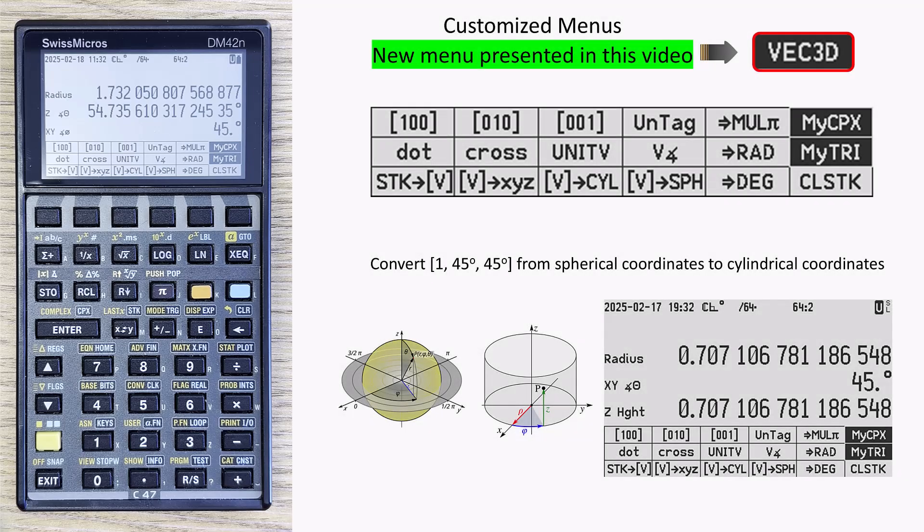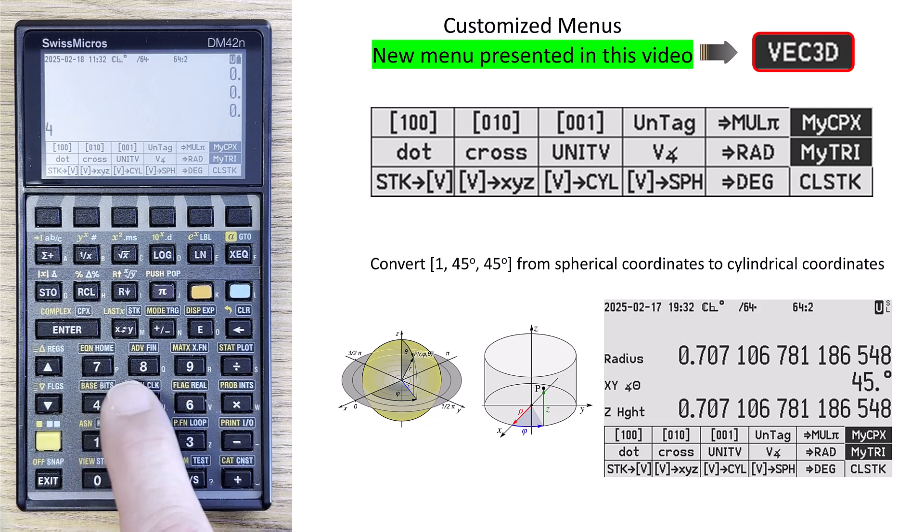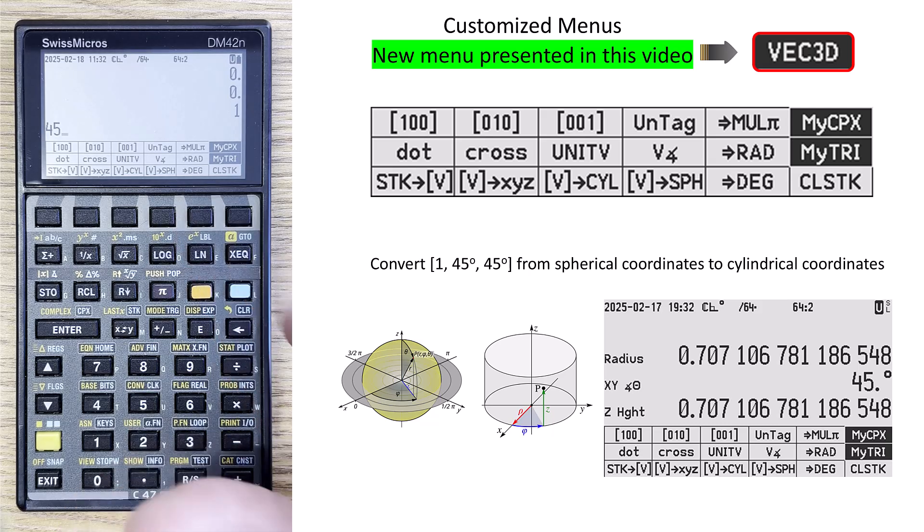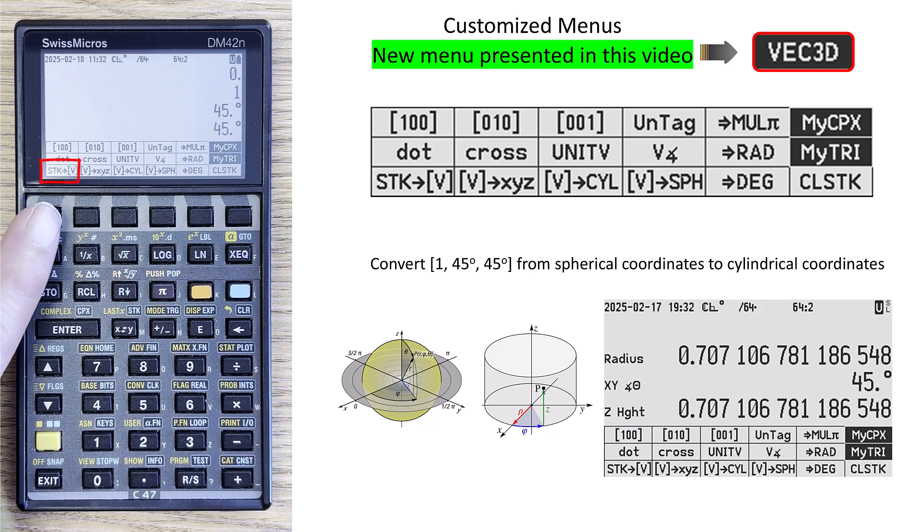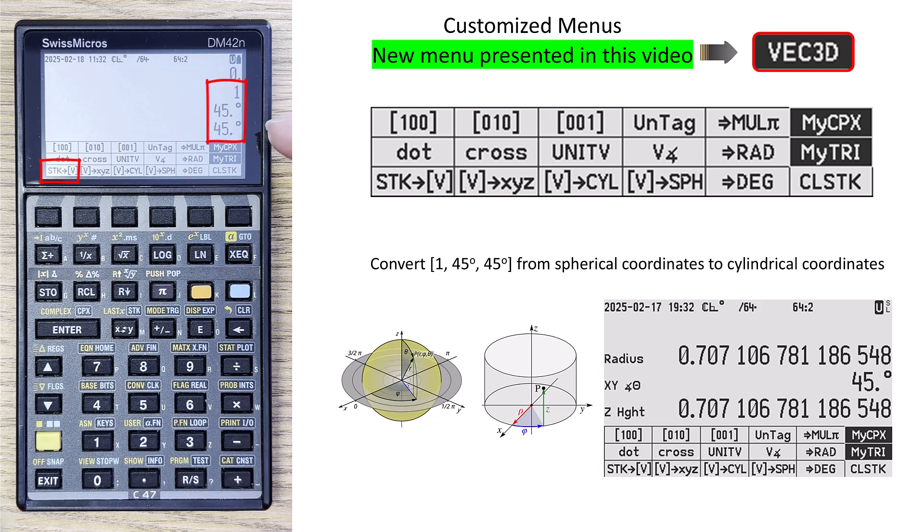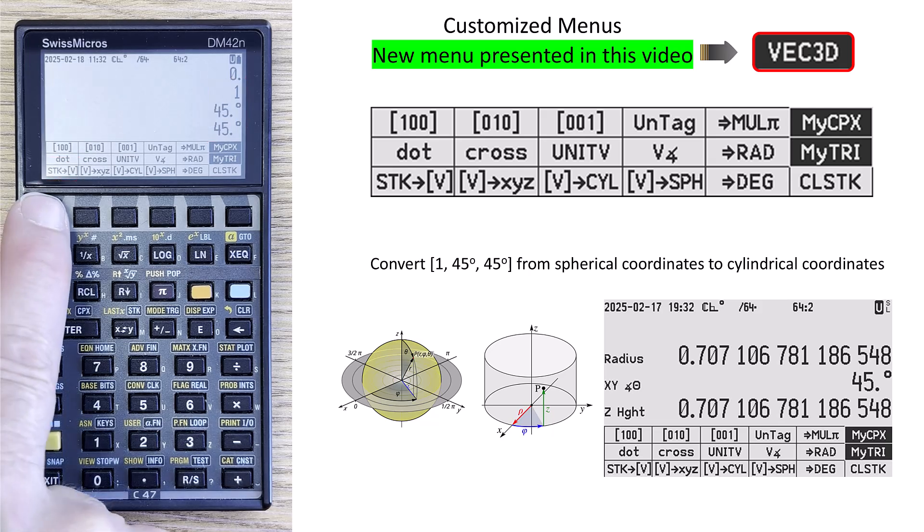Let's do another one. This time, let's clear the stack. Let's enter a vector in spherical coordinates and convert it to cylindrical. So in this case, it's 1 and then 45 degrees. I have to tag this 45 in degrees, and I need two entries of it. Now, the nice thing is, this routine that I wrote to convert the stack to a vector, it recognizes that the second and third entries are in angle format. So it knows that these three numbers represent a spherical coordinate system. It just figures this out automatically.